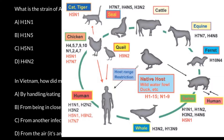Some of these viruses caused pandemics in the 20th century. For example, H1N1, which we got from pigs, is also known as the Spanish flu and caused a pandemic in 1918. We can also find H3N2 here, also a swine flu, also known as the Hong Kong flu.